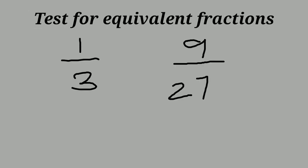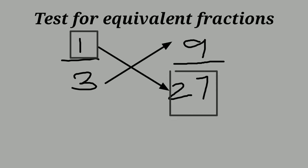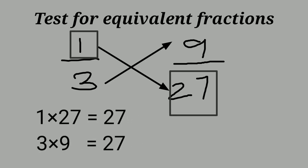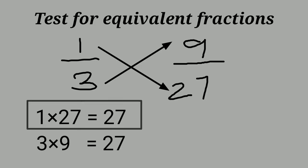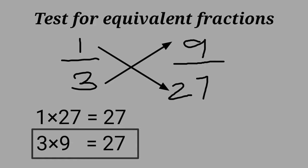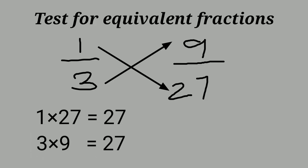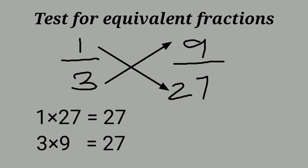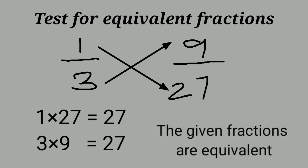Test for equivalent fractions: 1 by 3 and 9 by 27. To check, we use cross multiplication. 1 into 27 equals 27. Then 3 into 9 equals 27. Since both products are equal, we can write the conclusion: the given fractions are equivalent.